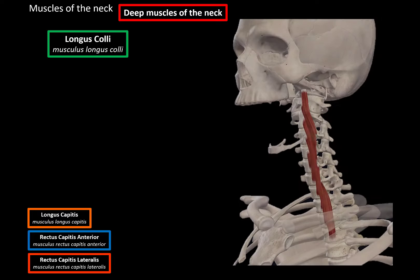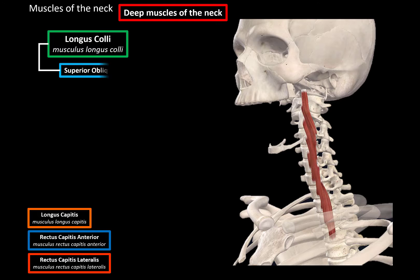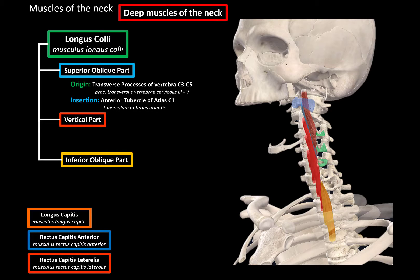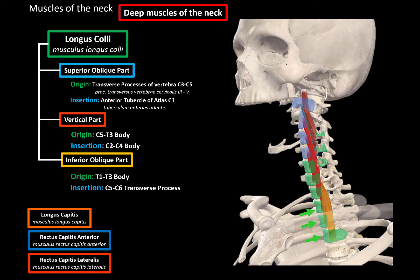Next we have the longus colli, which is a large muscle consisting of three parts. There's the superior oblique part, the vertical part, and the inferior oblique part. The superior oblique part originates from the transverse processes of vertebrae C3 to C5 and inserts at the anterior tubercle of the Atlas. The vertical part originates from the body of C5 to T3 and inserts at the body of C2 to C4. The inferior oblique part originates from the body of T1 to T3 and inserts at the transverse processes of C5 to C6. The function is the same as the longus capitis: bilateral contraction flexes the neck, and unilateral contraction turns the cervical vertebral column to the side.